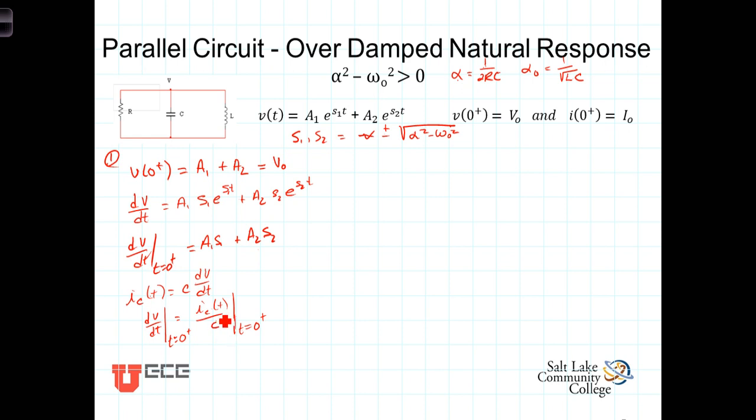Now the question becomes: how do we get the current through the capacitor immediately after it switches? You'll recall that for a capacitor, the voltage does not change instantaneously, but the current can and generally does change instantaneously. The current immediately after switching will generally be different than before. How do we find this? It's not too hard.